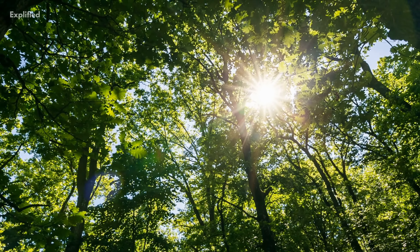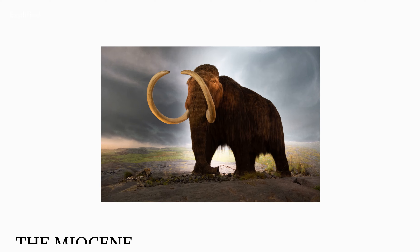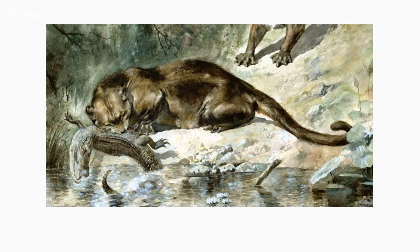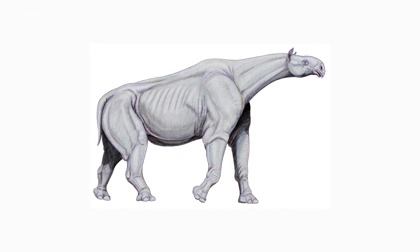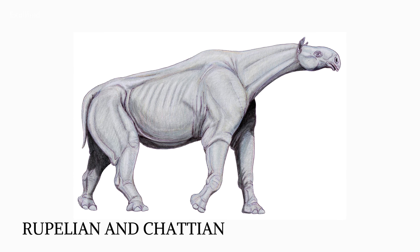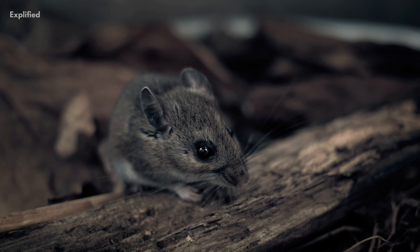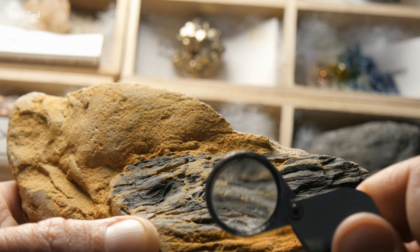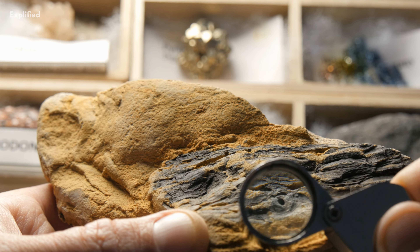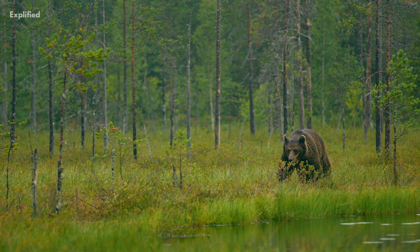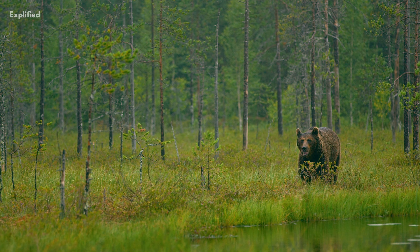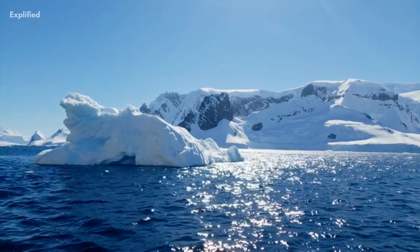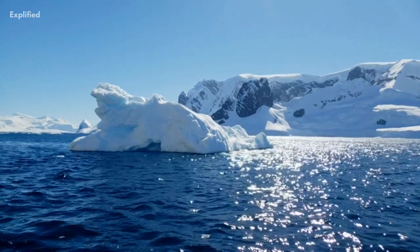These grasslands would provide huge expanses in the following epoch, the Miocene. The Oligocene epoch is split into two ages, each with its own rock stage — the Rupelian and Chattian. The start of the Oligocene is marked by a significant extinction event known as the Grande Coupure, which saw European fauna replaced by Asian fauna.